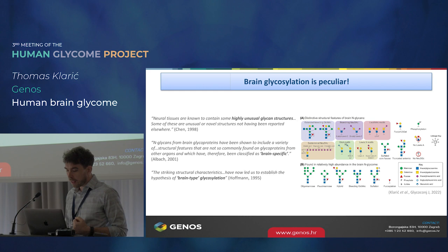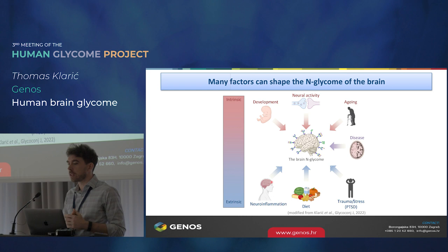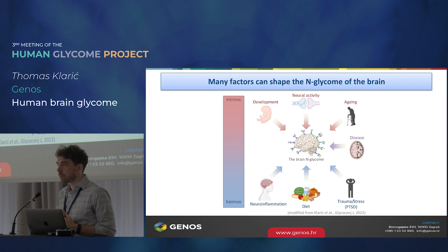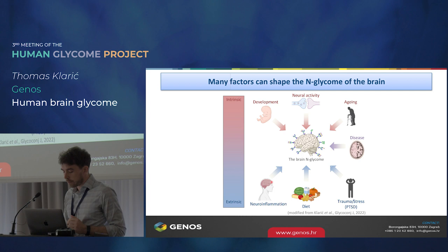The other thing we know is that the N-glycome of the brain is not static — in fact, it's dynamic and malleable. This seems logical to glycobiologists, but it's actually a newer finding for the brain, because the prevalent view until now was that it was quite static and stable. We now know that many factors and stimuli, both intrinsic and extrinsic, can shape the brain N-glycome in various ways, positively or negatively.